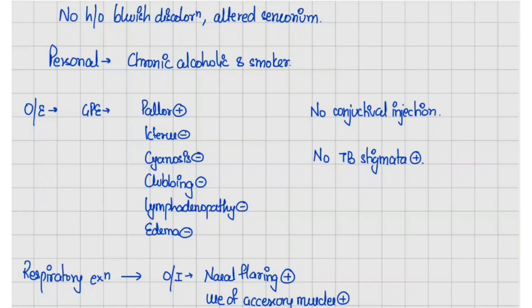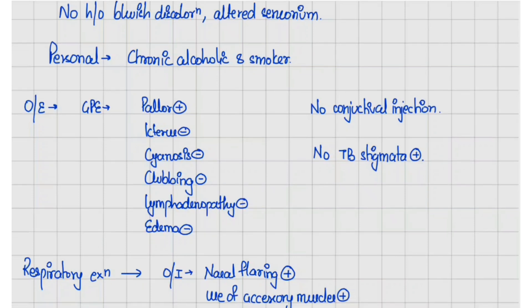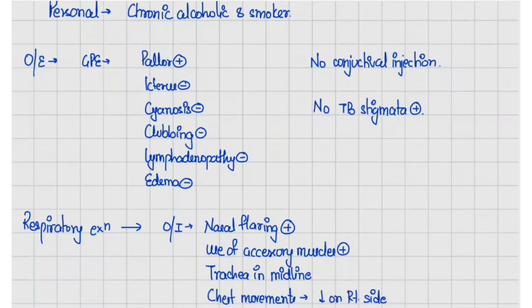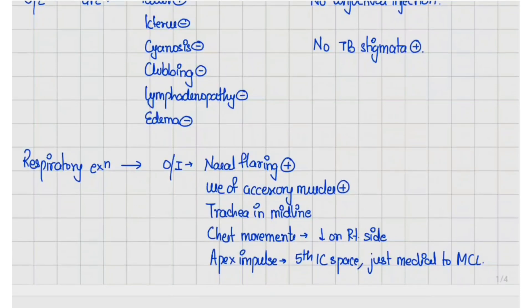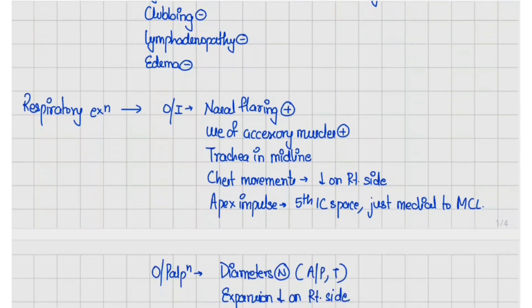On general physical examination, pallor is present, whereas there is no icterus, cyanosis, clubbing, lymphadenopathy, or edema. There is no conjunctival injection or reddening, and no TB stigmata present. On respiratory examination, nasal flaring is present, use of accessory muscles is present, and the trachea lies in the midline.